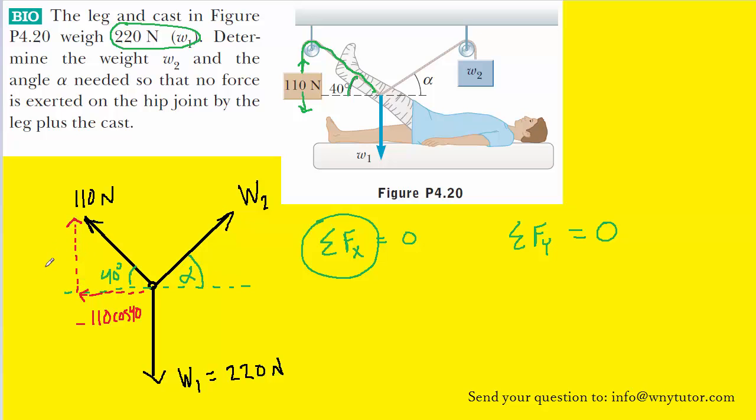The y-component points upward and will thus be positive and will be equal to 110 times the sine of 40 degrees. In a similar way, w2 can be broken up into x and y-components.